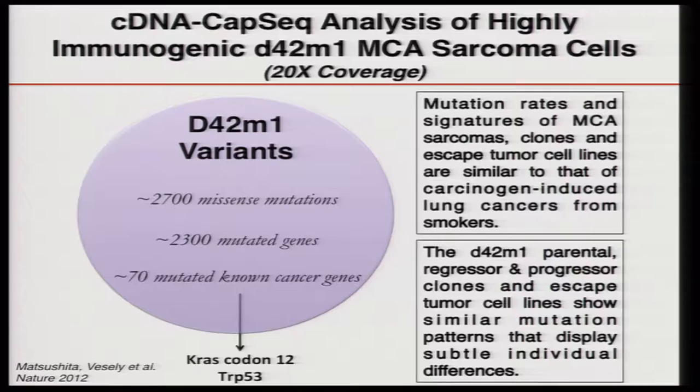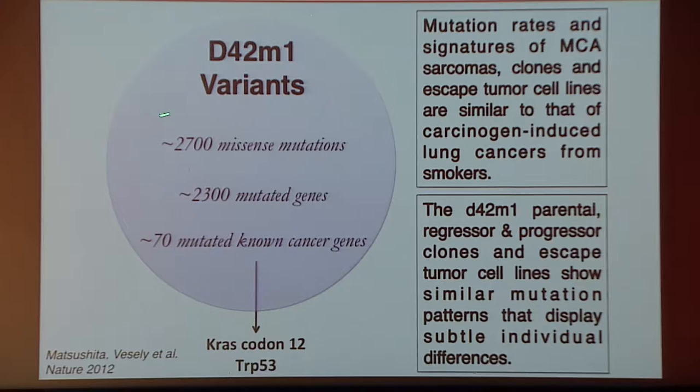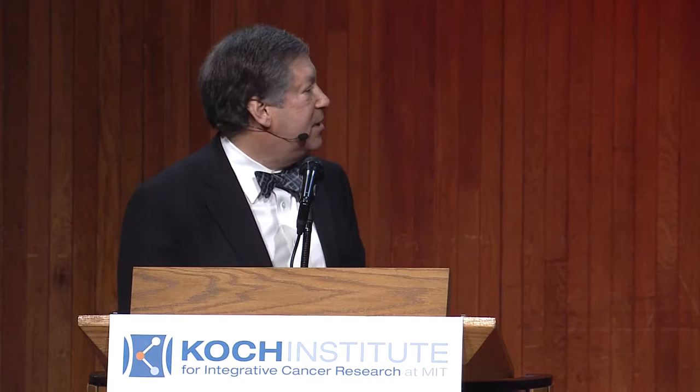As you would expect, because these are carcinogen-induced cancers, the D42M1 variants all have large numbers of mutations — about 2,700 missense non-synonymous mutations, 90% of which are point mutations. When you look at the mutational pattern in each one of these variants, you can tell phylogenetically that each variant is related to one another, but they do have some minor differences, confirming that these were immunogenically heterogeneous.